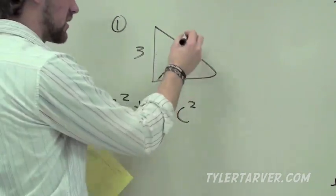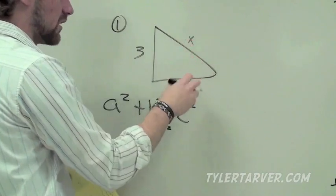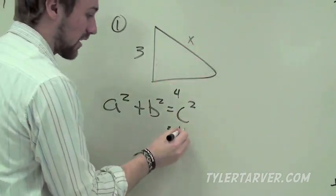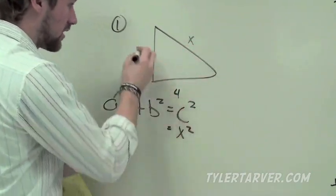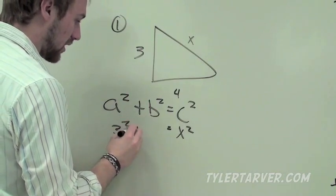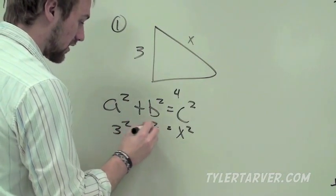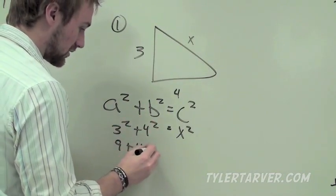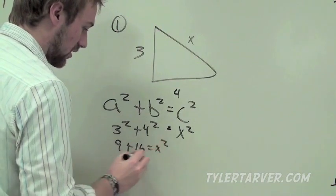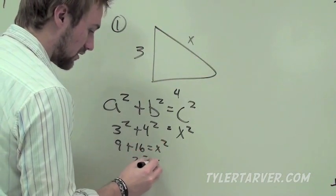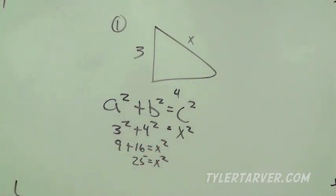So x goes in for c. It doesn't matter where a and b go — just plug in 3 squared and 4 squared. That gives us 9 plus 16 equals x squared, which simplifies to 25 equals x squared. Make sure you can still see this on the screen.